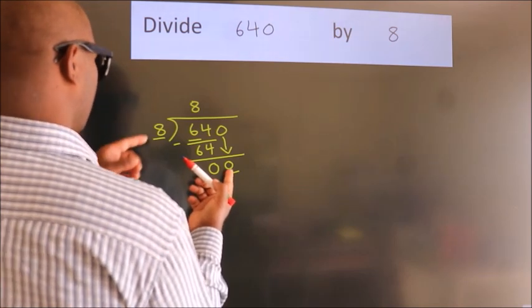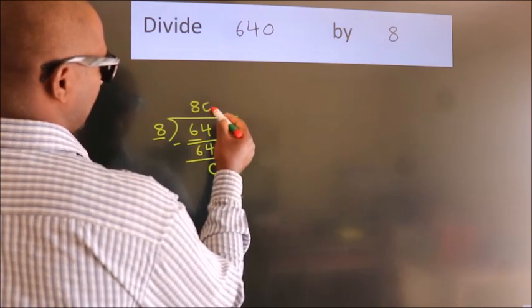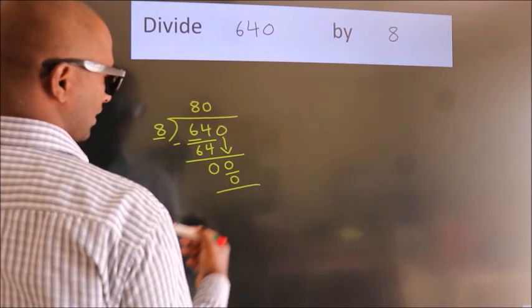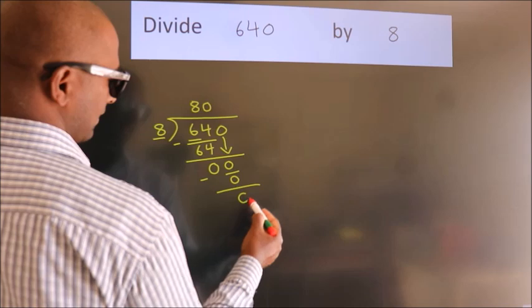do we get zero in the eight times table? Eight times zero is zero. Now we subtract and get zero.